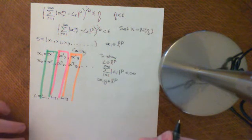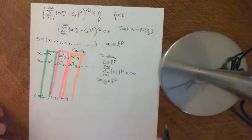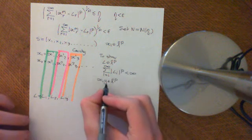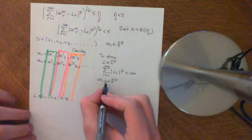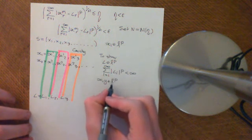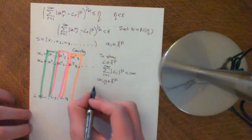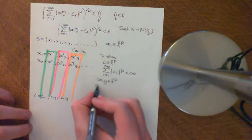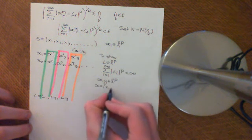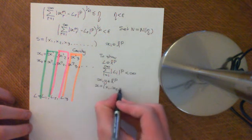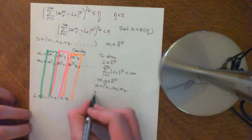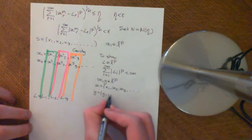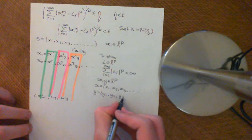We're recapping the Minkowski inequality. The Minkowski inequality says that if you have two sequences, x and y, which are elements of LP, where the sequence x is x1, x2, x3, etc., and the sequence y is y1, y2, y3, etc.